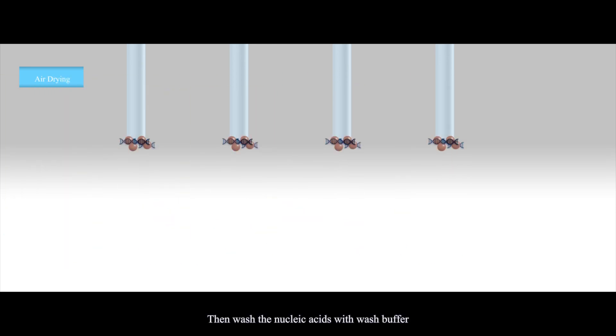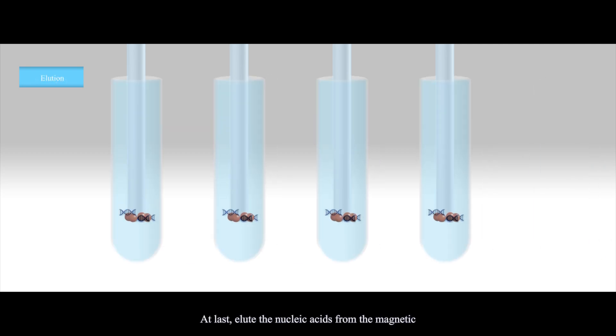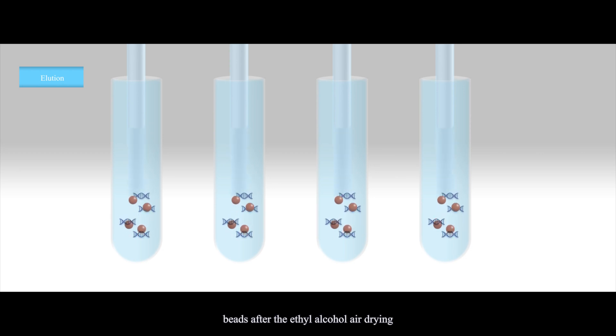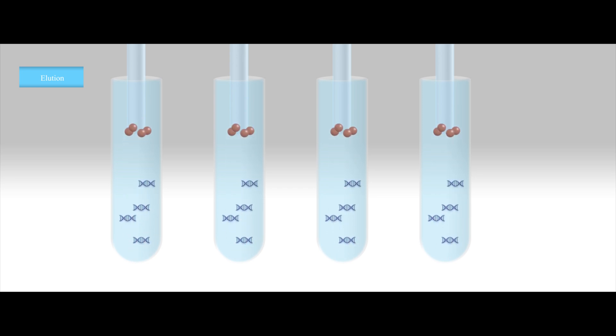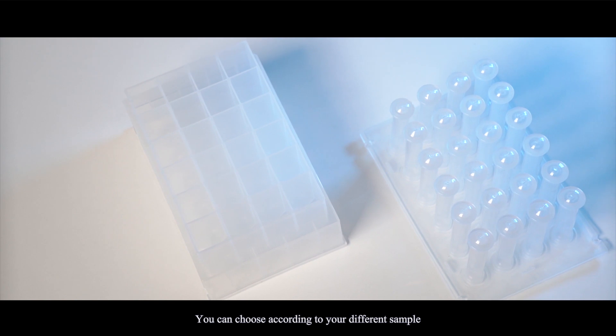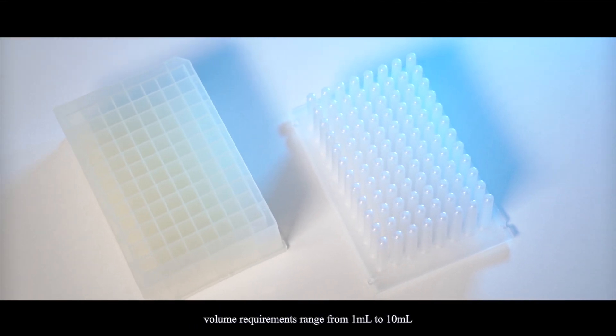Then wash the nucleic acids with wash buffers several times for purification. At last, elute the nucleic acids from the magnetic beads after the ethyl alcohol air drying. You can choose according to your different sample volume requirements, ranging from 1 milliliter to 10 milliliters.